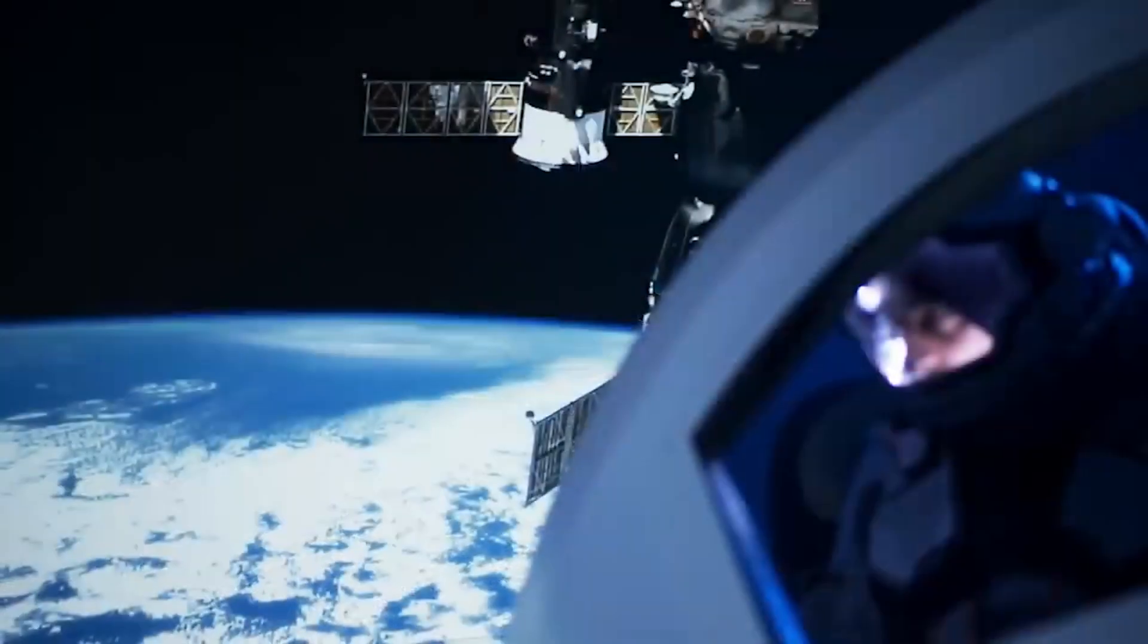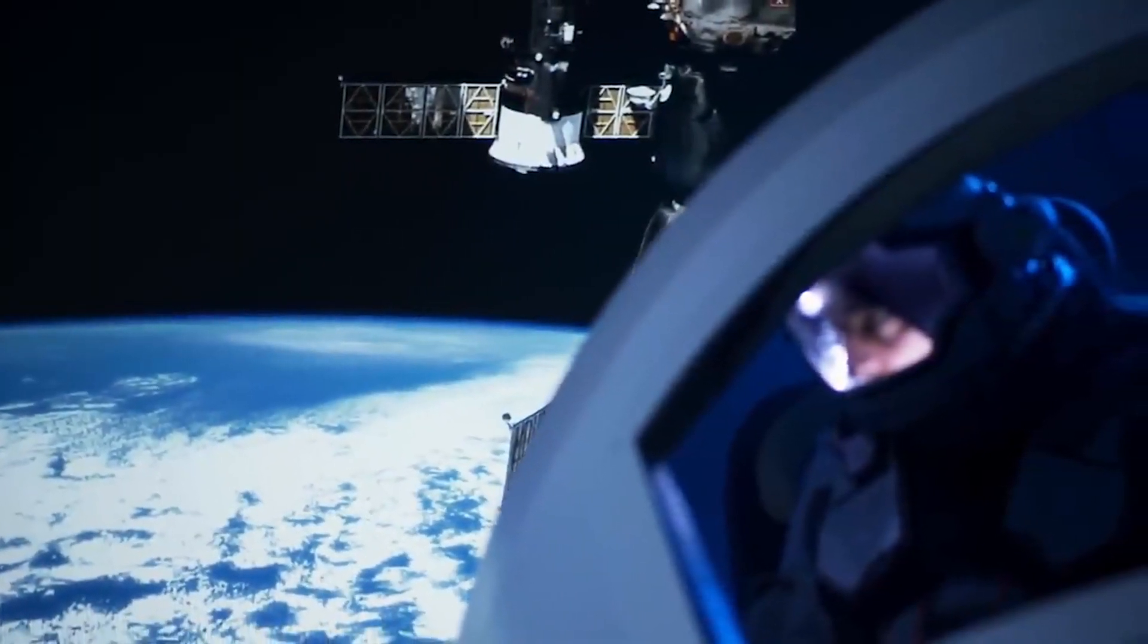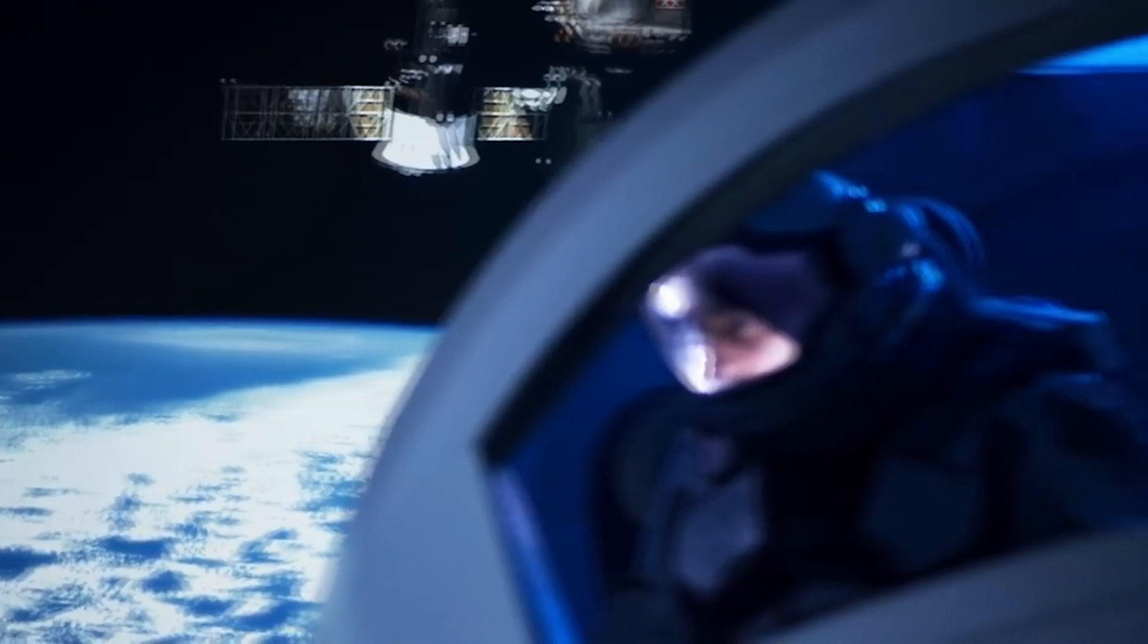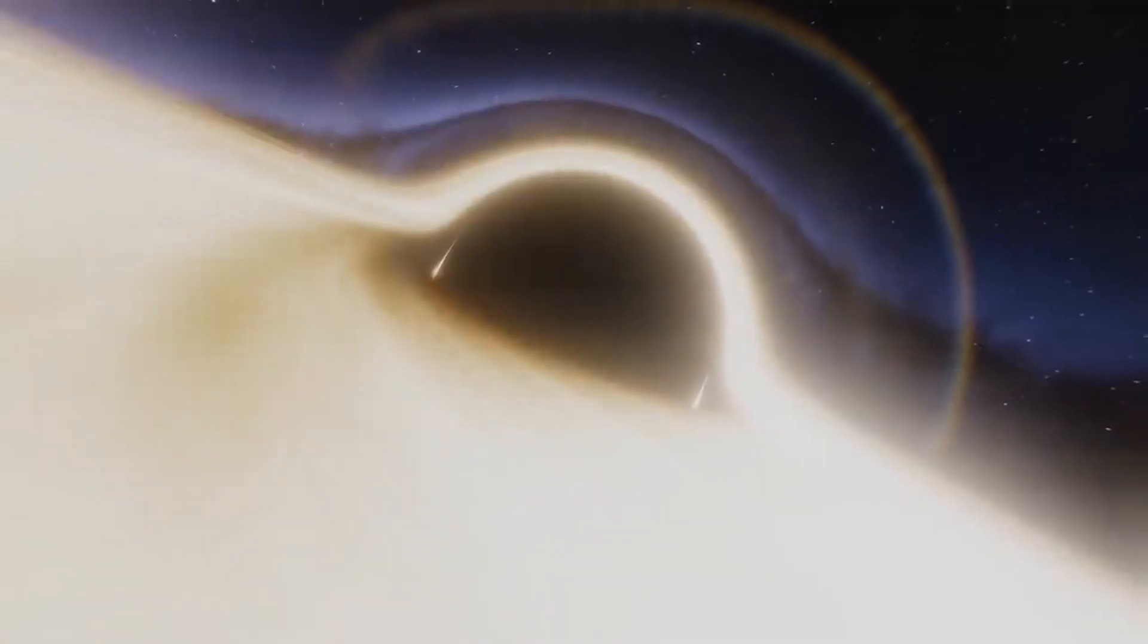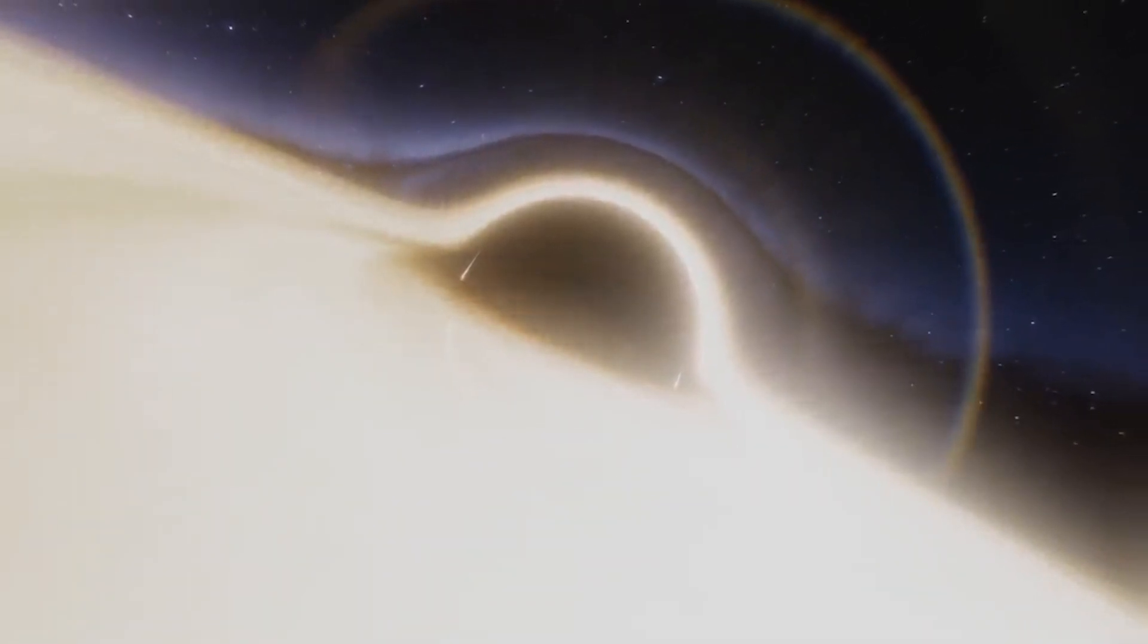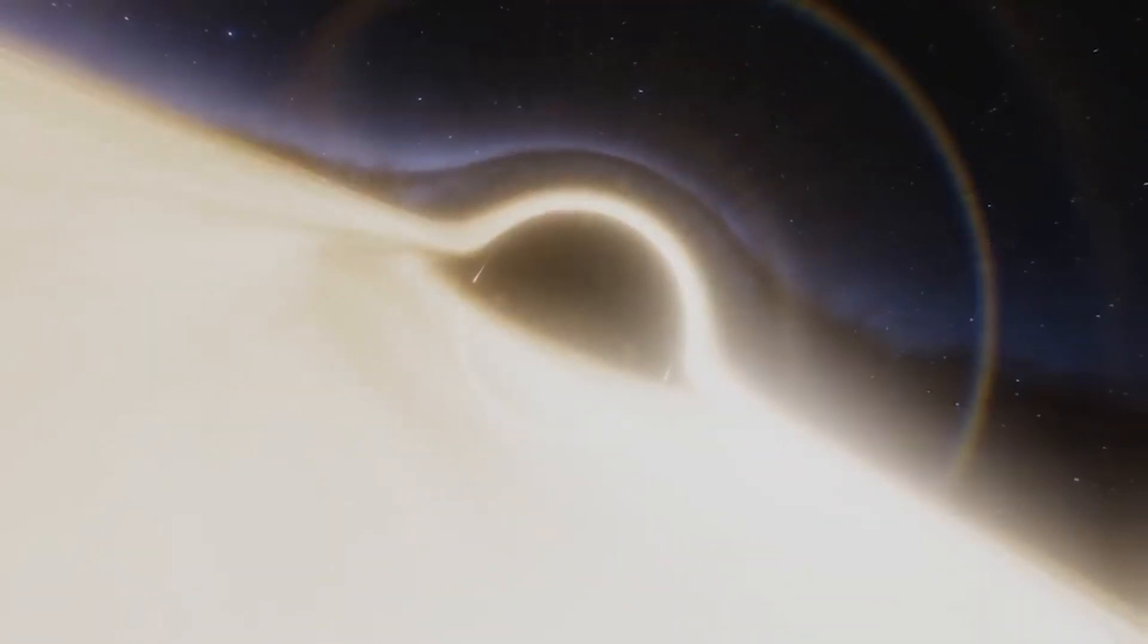The square of the orbital period of a planet is directly proportional to the cube of the semi-major axis of its orbit. In simpler terms, planets closer to the sun have shorter orbital periods than those farther away.